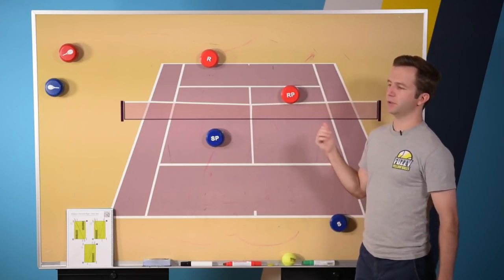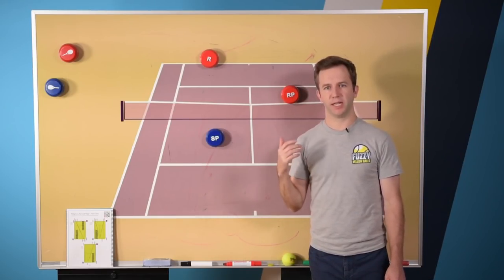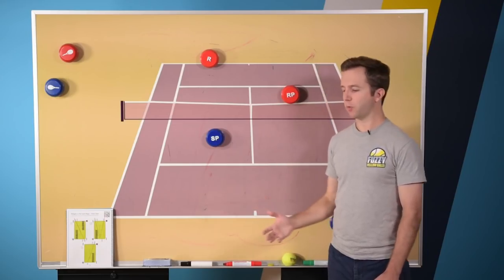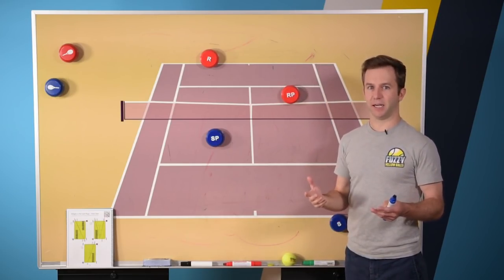So the advice I always get from whether it's the Bryan Brothers or Navratilova or Gigi, is when you have someone that's super aggressive you've got to pick your return spots ahead of time. And if they move, great.